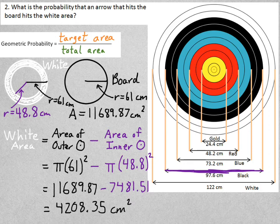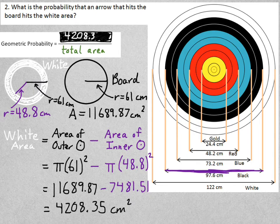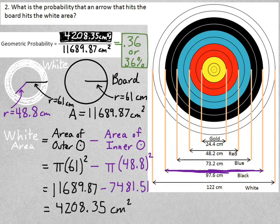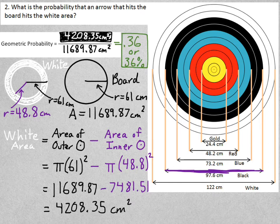I've found my target area. That's the area of the white. So I'll plug that in. The target area is 4,208. And the total area is the area of the board. That's 11,689.87. Dividing the two, I get 0.36. So there's a 36% chance that his arrow will hit the white ring.